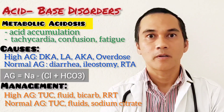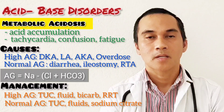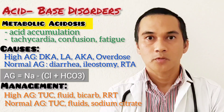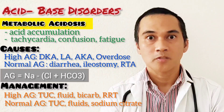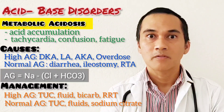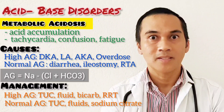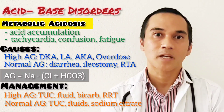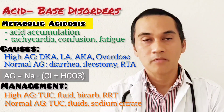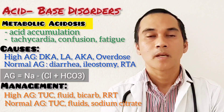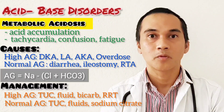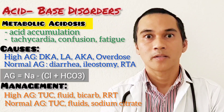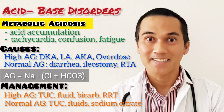What is the management for metabolic acidosis? You have to treat the underlying cause, do fluid resuscitation, and bicarbonate infusion if indicated — specifically if the pH is below 7. And if worse comes to worst, you have to do RRT, renal replacement therapy, or dialysis.